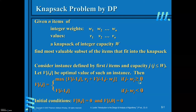If you can accommodate the i-th item, that means the capacity j minus w_i is greater than or equal to 0, indicating j is greater than or equal to w_i. In that case, you have to consider the maximum of two values: v[i-1][j] and v_i plus v[i-1][j minus w_i]. Whichever is maximum is assigned to v[i][j]. This is the recurrence relation for the knapsack problem using dynamic programming.